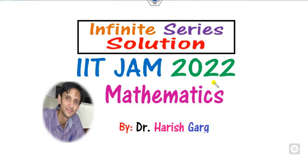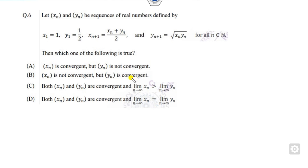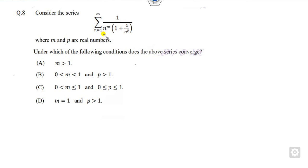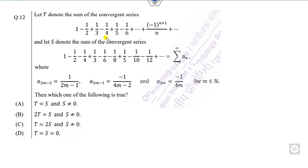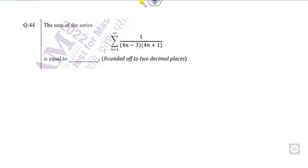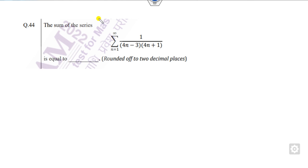Hello students, welcome to the next lecture on the IIT JAM 2020 mathematics. Today we will discuss all those questions which are asked related to the infinite series in this video. The first question is related to the radius of convergence. The second one is related to convergent and divergent series and their limits. The third one is checking whether a series is convergent or divergent. The fourth one is finding the condition on m and p so that the series converges. Then there is a rearrangement series, the sum of a convergent power series, and you have to fill in the blanks and find the radius of convergence.